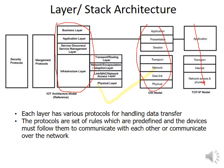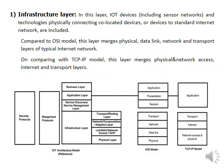Alongside the infrastructure layer we have the service discovery and service management layer, the application layer, and the business layer. The infrastructure layer includes IoT devices and technologies that physically connect co-located devices or connect devices to the standard internet network. Compared to the OSI model, this layer merges the physical, data link, network, and transport layers. In the TCP/IP model comparison, this layer merges the physical, network access, internet, and transport layers.